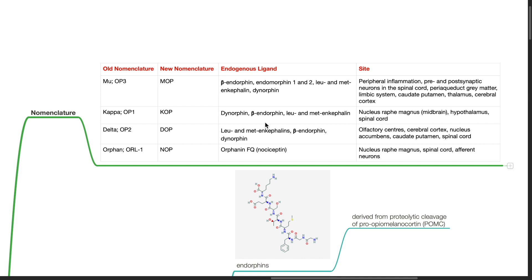The new nomenclature for the delta or OP2 receptor is DOP. Its endogenous ligands are leucine and methionine enkephalins, beta-endorphin, and dynorphin. DOP receptors are located at the olfactory centers, cerebral cortex, nucleus accumbens, caudate putamen, and the spinal cord.